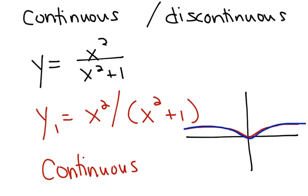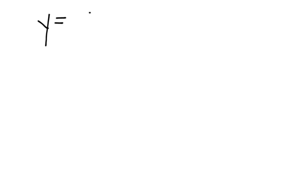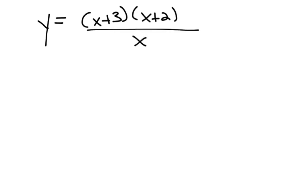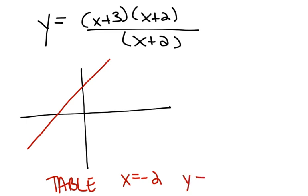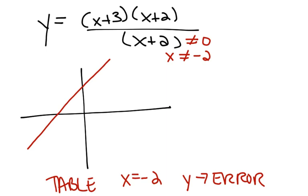Not all functions will behave that way. Sometimes you'll have places where the graph is discontinuous — that's when we look for places where there's an error in the table or a break in a graph. If you look at the graph of y equals x squared plus 3x plus 2 over x plus 2, at first glance you might think it's continuous. But if you go to the table function, you'll see that at x equals negative 2, y says error — because the denominator cannot be 0, and negative 2 is the value that makes it 0.